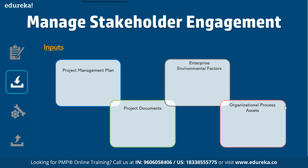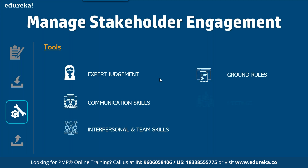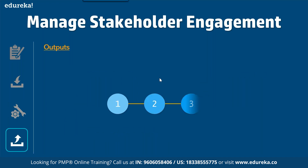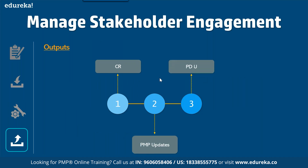The tools for manage stakeholder engagement are similar to those we've seen before: expert judgment, communication skills, ground rules, and meetings. The outputs are three: first is change request, second is project management plan updates, and third is project document updates.